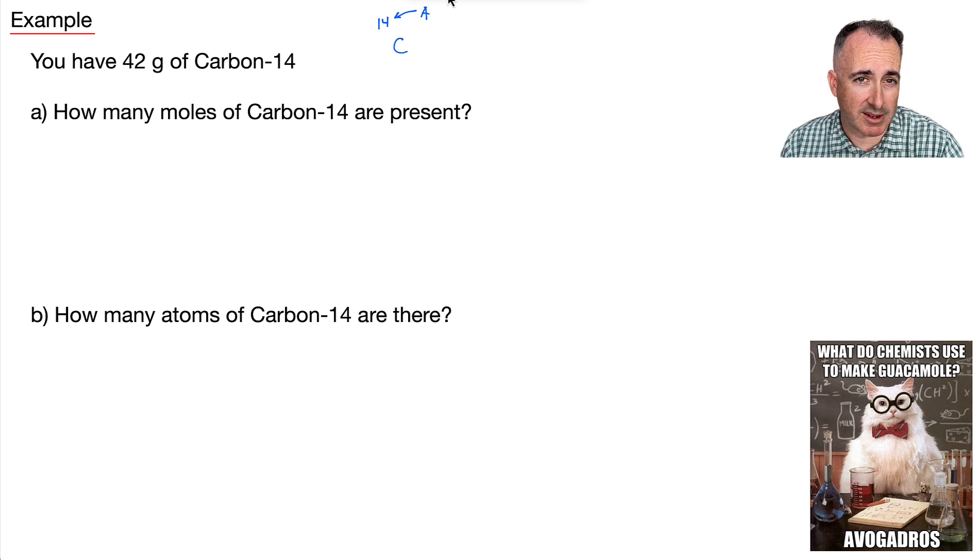All right, how many moles are present? That's not so obvious. So I think it's important to consider that equation I just told you before, right? That the n, the number of moles, is equal to the mass you have divided by the molar mass. Now why is this helpful? Because, well, what's the mass that we have? Do we have a mass? Yes, we're told that we have 42 grams, so we're going to say that's 42 grams.